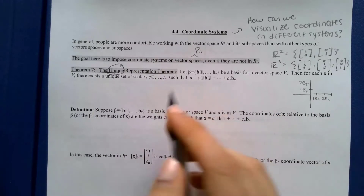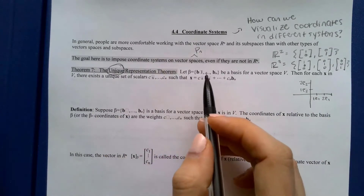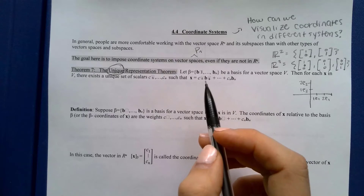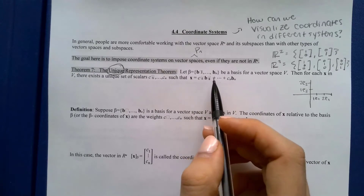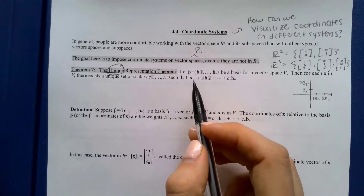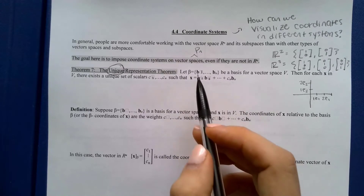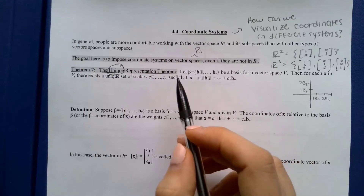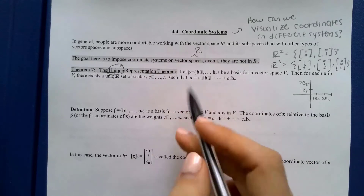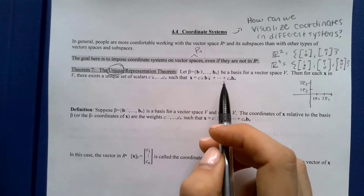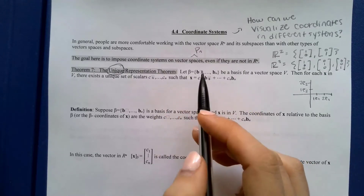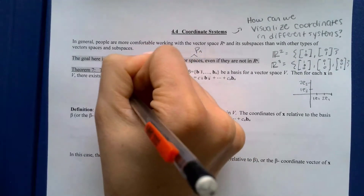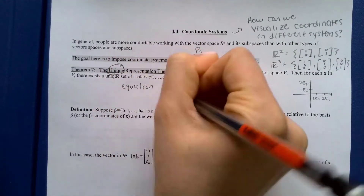As long as the vectors are linearly independent and they span the vector space or subspace, that counts as a basis. The key is that the representation will be unique. The basis vectors are linearly independent, so this is the most efficient set of vectors I could use to create x. From previous chapters, if vectors are linearly independent then putting them in a matrix gives a pivot in every column.